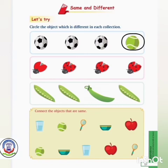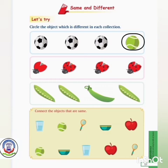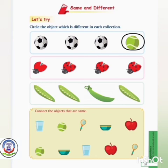Now let's have another picture. Look at this picture of ladybugs and identify which ladybugs are the same and which is different. These three ladybugs are having dots on their wings and one is not. So we will put a circle over it.